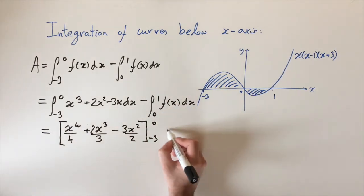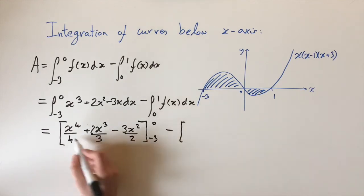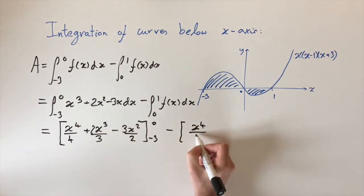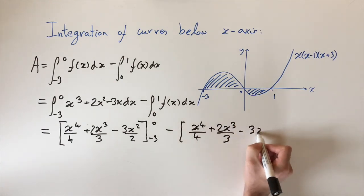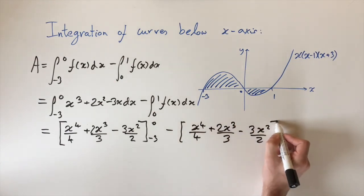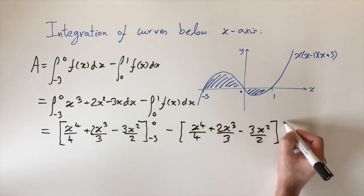And then this integral is going to be the same. I can rewrite it out again: x to the 4 over 4 plus 2x cubed over 3 minus 3x squared over 2. But now between the limits of 0 and 1.